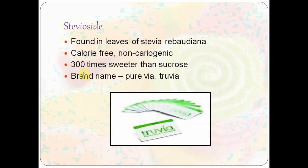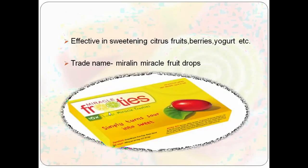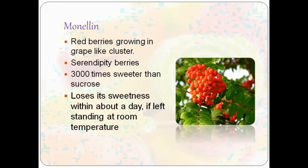Some natural sweeteners are also available. Stevioside is found in the leaves of Stevia rebaudiana, is calorie free, non-cariogenic, and 300 times sweeter than sucrose. Miraculin is from a shrub grown in West Africa that produces berries which cause sour substances to taste sweet, sold under the trade name Miracle Fruit Drops. Licorice is derived from the licorice root, is 50 times sweeter than sucrose, and is used as an expectorant with pharmaceutical value. Monellin is found in red berries and is 3000 times sweeter than sucrose.